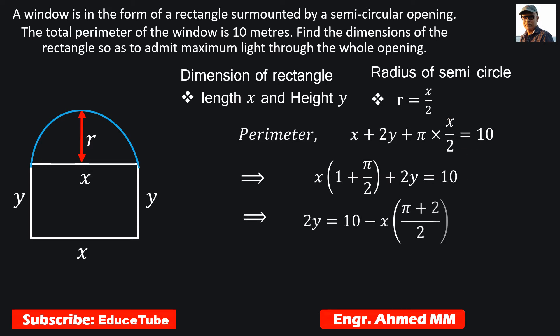Now in the next step we can write it as this one. It can also be written like this. Then we can get the equation for y equal to 5 minus x in bracket pi plus 2 by 4. This is the equation for y, and this value for y we will use in the equation for area.